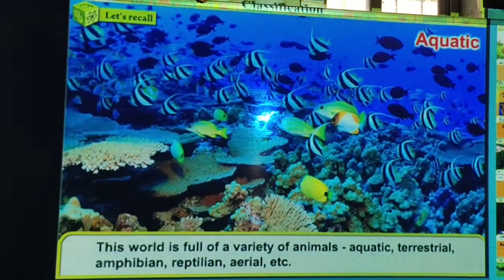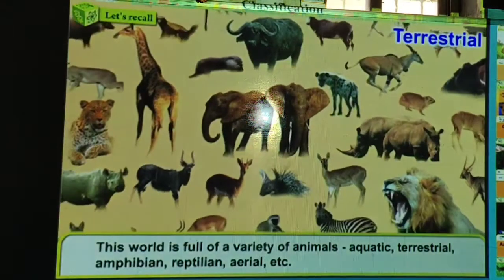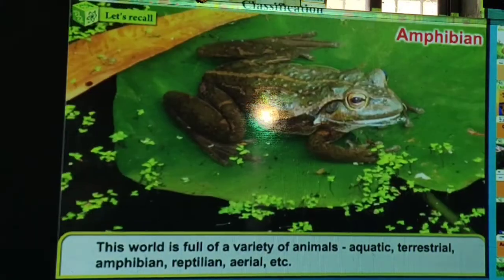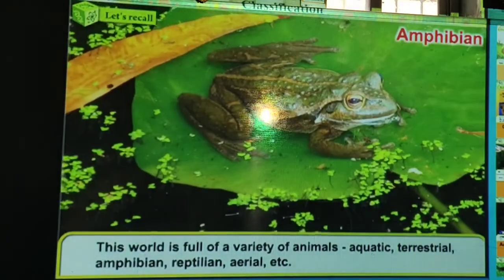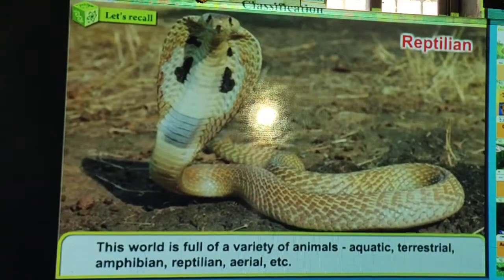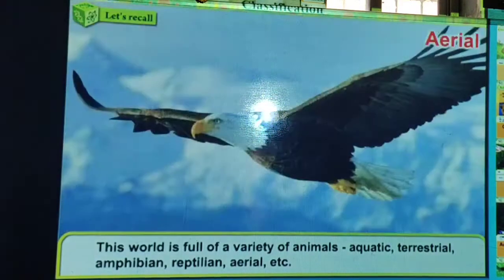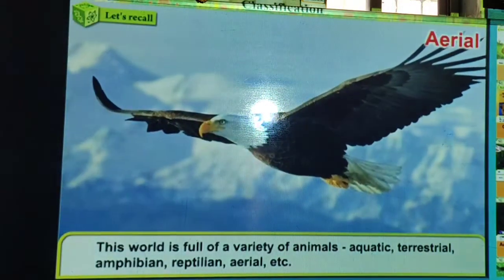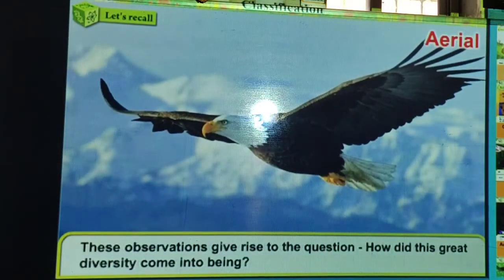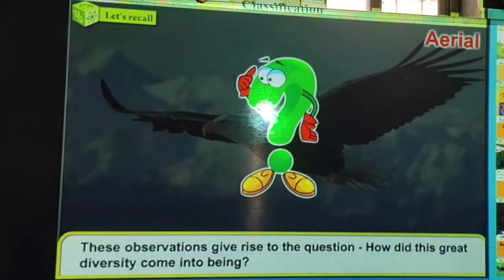Some animals are aquatic — water living. Some are terrestrial — land living. Some are amphibian — water and land living. And some are aerial. These observations give rise to the question: how did this great diversity come into being?